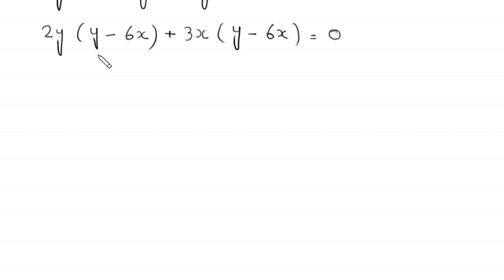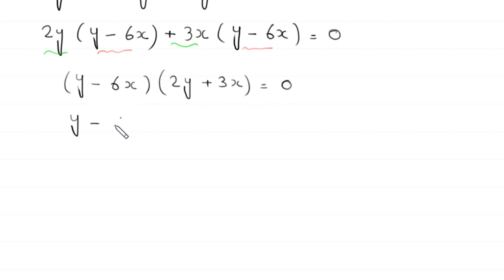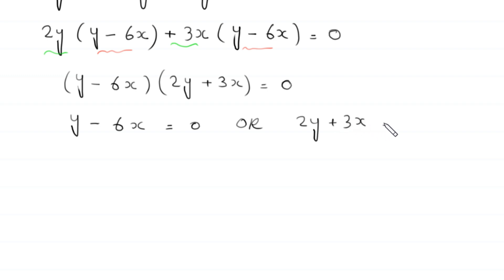As you can see, the expression (y minus 6x) is a common factor. So we factor out (y minus 6x), and in back we are left with (2y plus 3x) equals 0. So either y minus 6x equals 0, or 2y plus 3x equals 0.